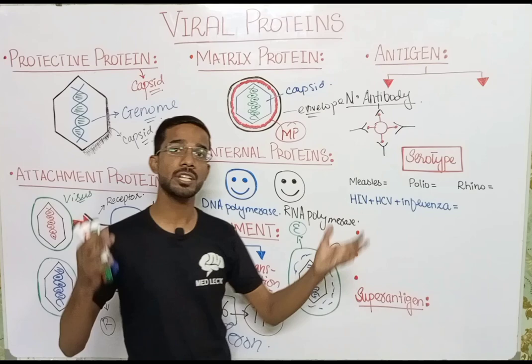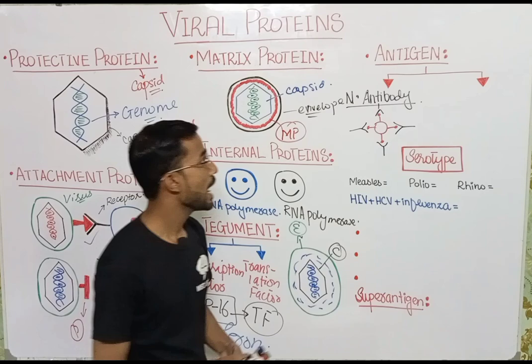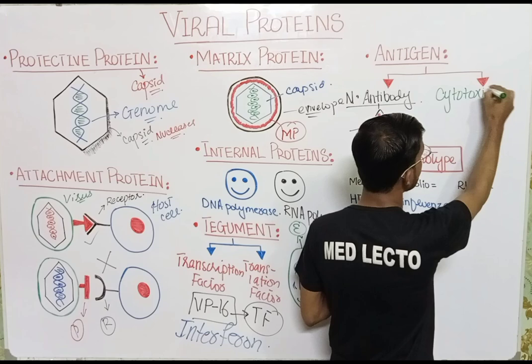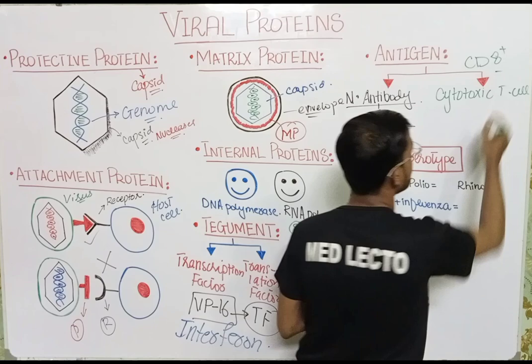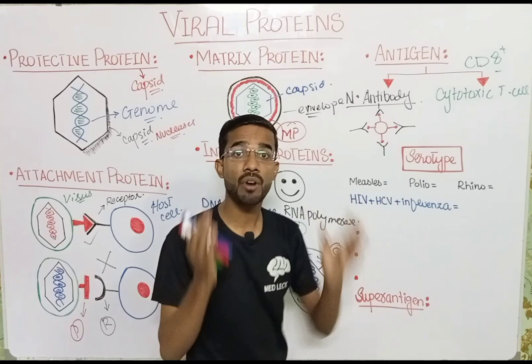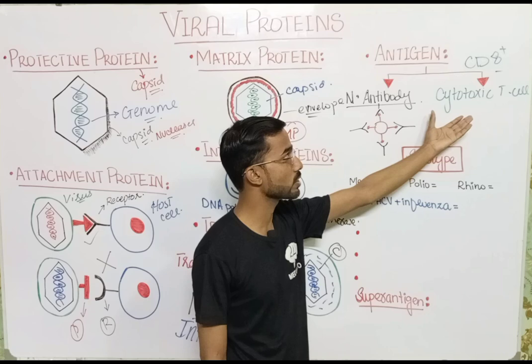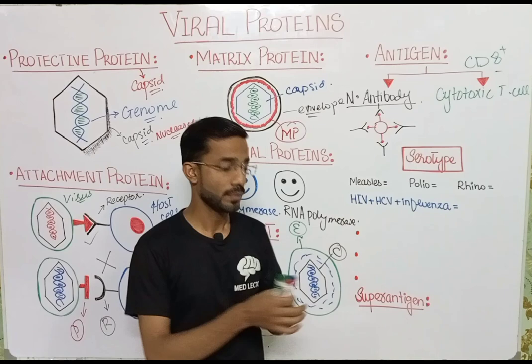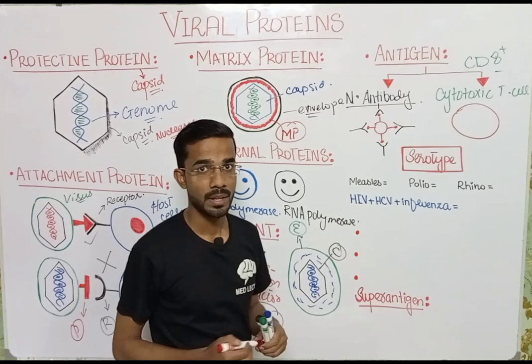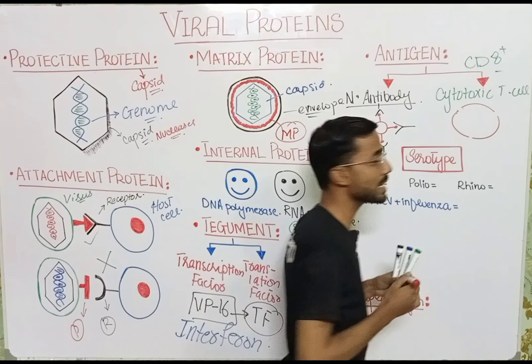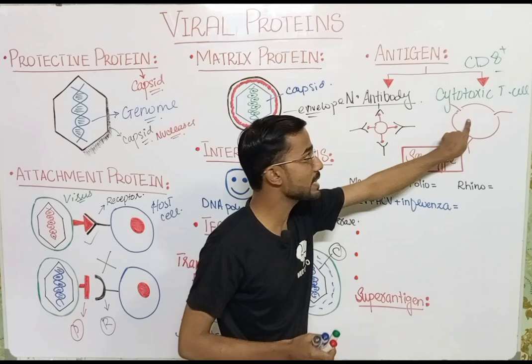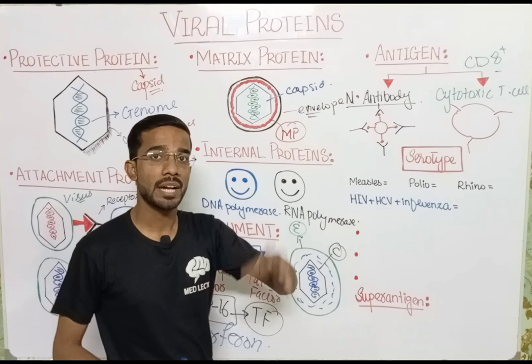The neutralized virus is ultimately destroyed by macrophages. Next is the cytotoxic T cell, also called CD8-positive cells. They digest or destroy cells that are infected by viruses. The cytotoxic T cell makes holes in the infected cell, causing its ultimate destruction.